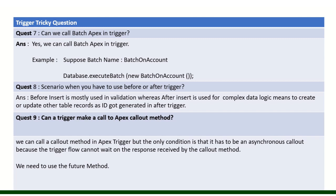When should you use before vs. after trigger? Before insert is mostly used for validations — when you want to perform actions on the same record. After insert is used for more complex logic, because by then you have the record ID. For example, after inserting an account and getting its ID, you can create another related record or update another object. Use before for validations, and after when you need to interact with other objects.